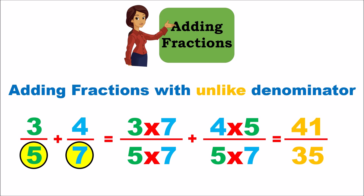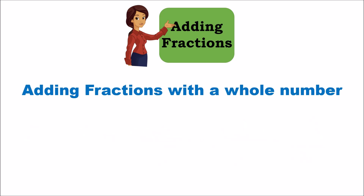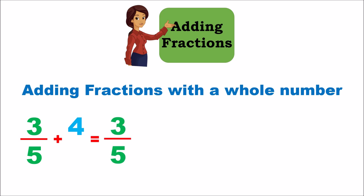Now let's look at a slightly different variation: suppose you have a fraction and you're trying to add a whole number to it. For example, 3 fifths plus 4. The 4 is a whole number, not a fraction. You cannot just add 3 plus 4 to get 7 divided by 5 — that won't work. There's a small step we need to go through to add the fraction and the whole number together.